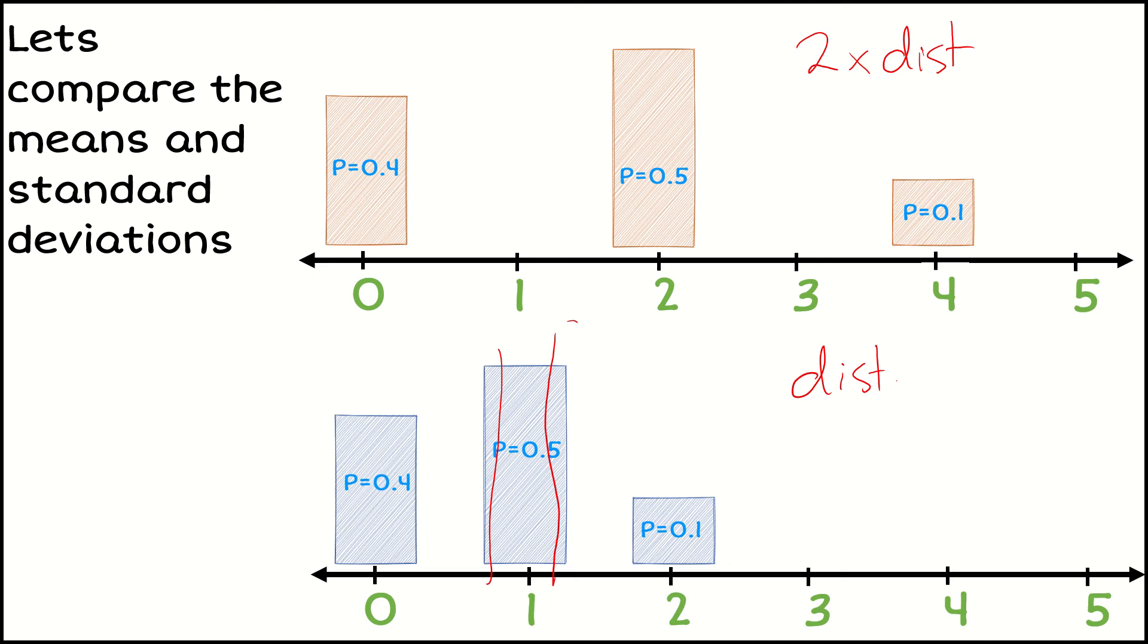Now let's think about, what is the mean going to be on my linear combination distribution? So that's two times distribution. Well, the middle bar has moved up, so our mean is going to still be somewhere in that kind of range there. So our mean has doubled. If our mean was at one, now that's doubled to two. If it was just under one, it's doubled. If it's just over one, it's doubled. So our mean has doubled what it was, and that's the same constant that we've multiplied the distribution by.